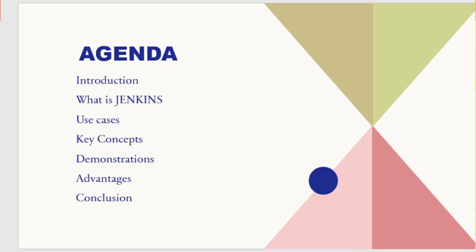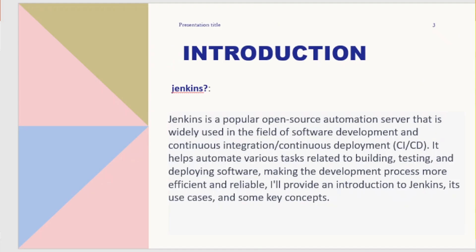Jenkins is a popular open-source automation server that is widely used in the field of software development and continuous integration/continuous deployment (CI/CD). It helps automate various tasks related to building, testing, and deploying software, making the development process more efficient and reliable.